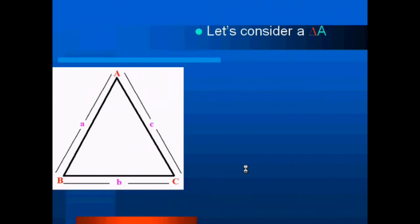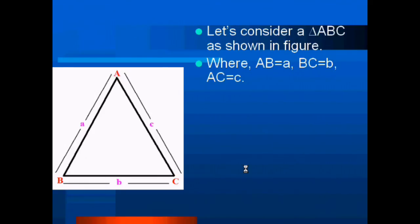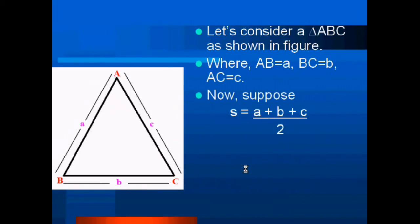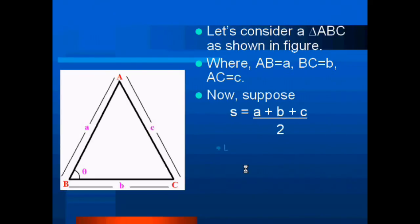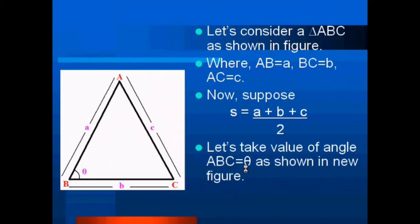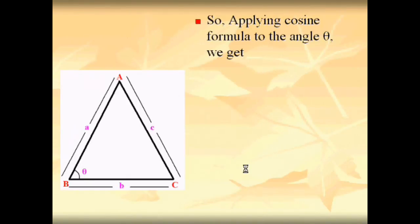Here a, b, and c are the values of the sides of the triangle. Let's consider a triangle ABC as shown in the figure, where AB = a, BC = b, and AC = c. Suppose s = (a + b + c) / 2. In the figure you can see angle ABC = θ. Applying the cosine formula to angle θ, we get: cos θ = (a² + b² − c²) / 2ab.